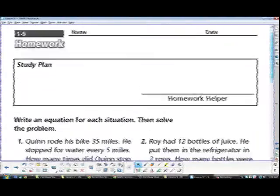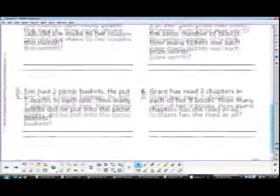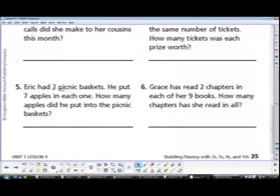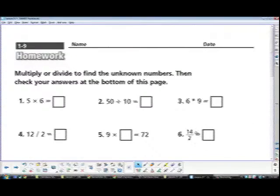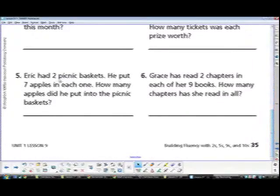And, we'll also be doing some problems. I like this one. Eric had 2 picnic baskets. It's the same exact thing, almost, that we just talked about. He put 7 apples in each one. How many apples did he put into the picnic basket? This is the one we did with division, 14 divided by 2. And, this one, 2 times 7, is multiplying. We'll be doing these two sheets in class.